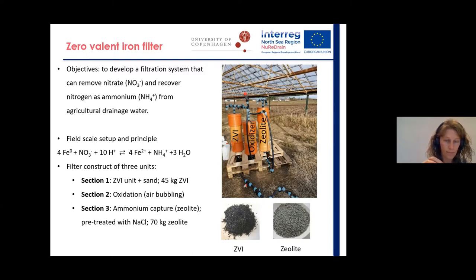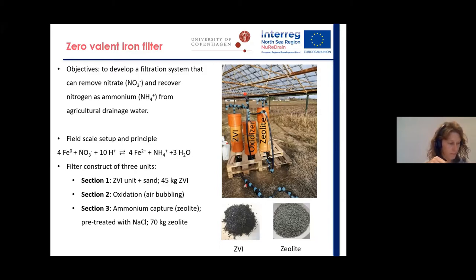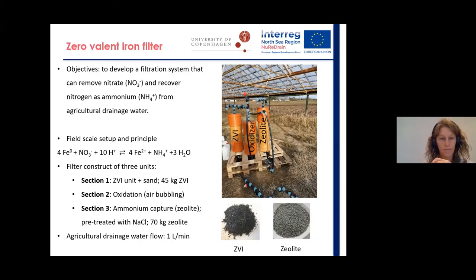In this field experiment we used approximately 70 kilograms of zeolite, which is a natural volcanic rock — a good cation trap with high affinity for ammonium. We pre-treated the zeolite with sodium chloride so we had sodium as the exchangeable cation. The flow in the filter system was one liter per minute and the retention time for each unit was 35 to 45 minutes.